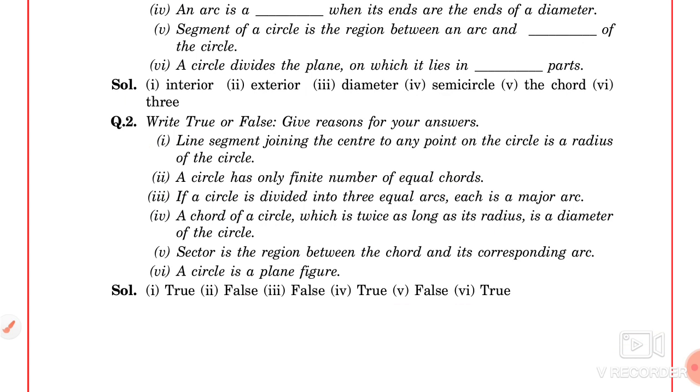A circle has only a finite number of equal chords. That is false. We can have an infinite number of equal chords in a circle. We can make many chords that are equal.